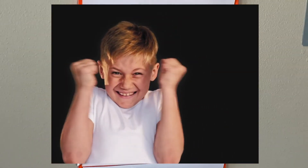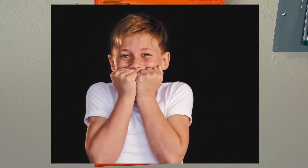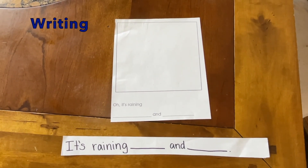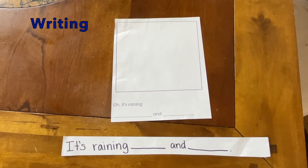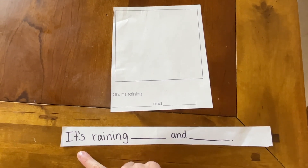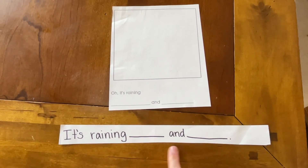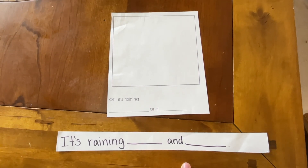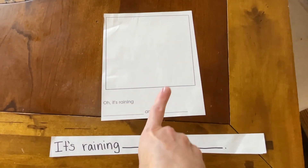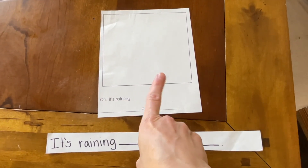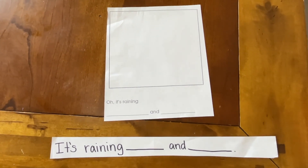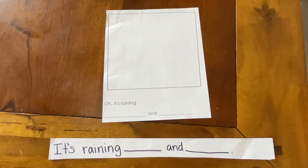You can reveal the word and then they get all excited that they're right. You can also turn this into a writing activity — just give them the prompt 'It's raining blank and blank' and they come up with their own. Then they get to draw a picture and illustrate it, which turns into a fun writing and even art extension.